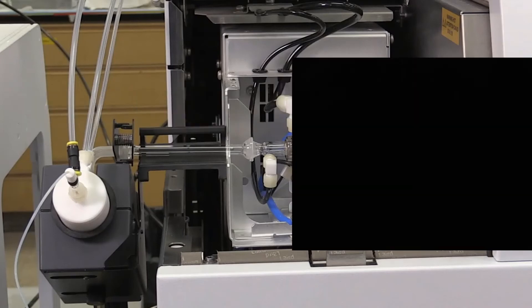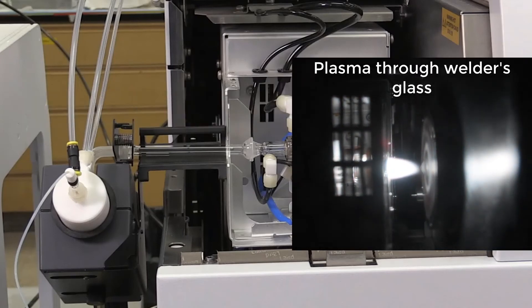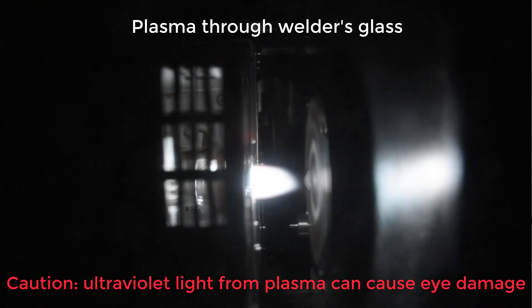The core component of an ICP is the high-temperature plasma used to atomize samples. The torch generates a plasma from an argon source.